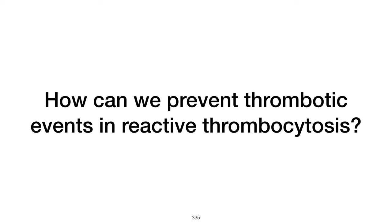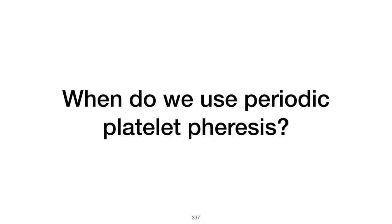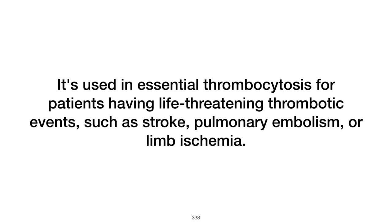How can we prevent thrombotic events in reactive thrombocytosis? Preventing thrombotic events involves using antiplatelet agents like aspirin, particularly in patients with extremely high platelet counts or additional risk factors for thrombosis. When do we use periodic platelet pheresis? Periodic platelet pheresis is used in essential thrombocytosis, particularly in patients experiencing life-threatening thrombotic events such as stroke, pulmonary embolism, or limb ischemia, to reduce the platelet count and risk of further thrombotic complications.